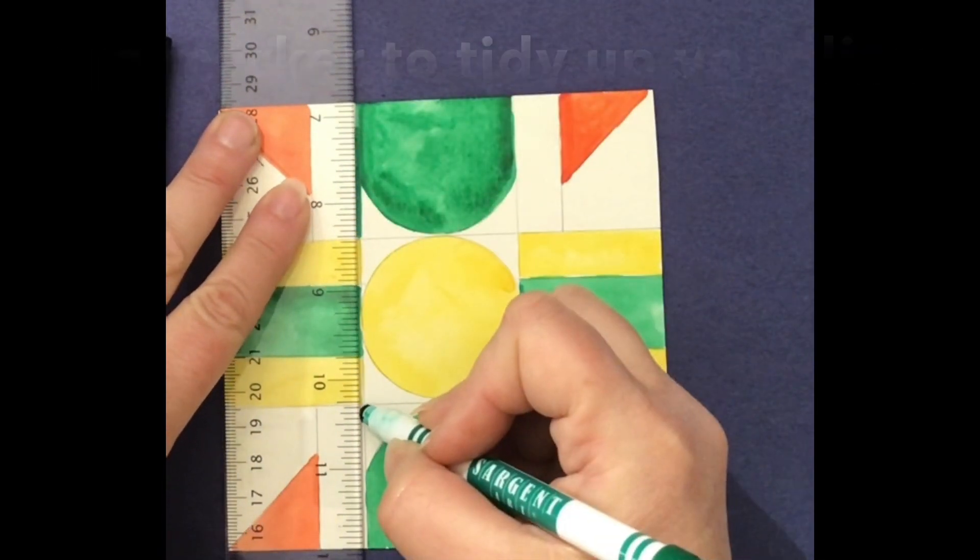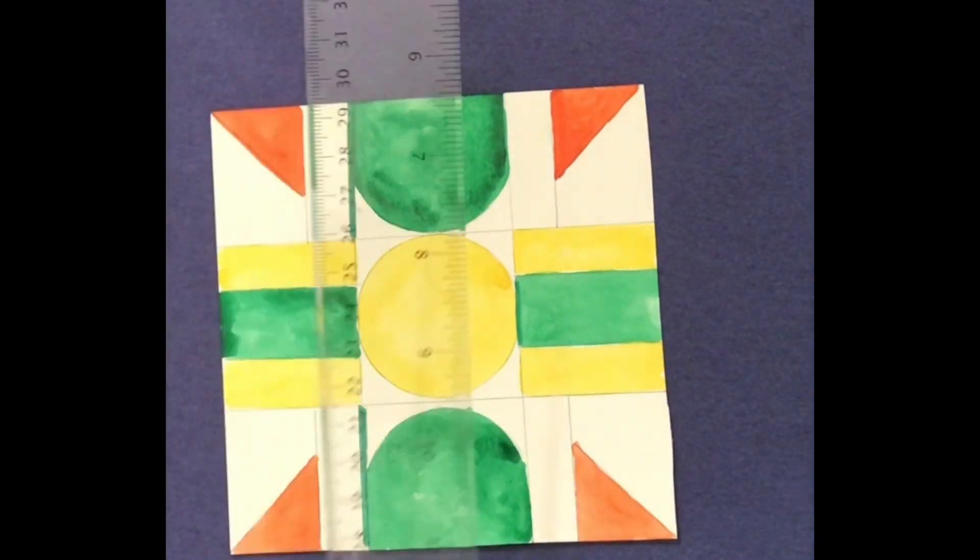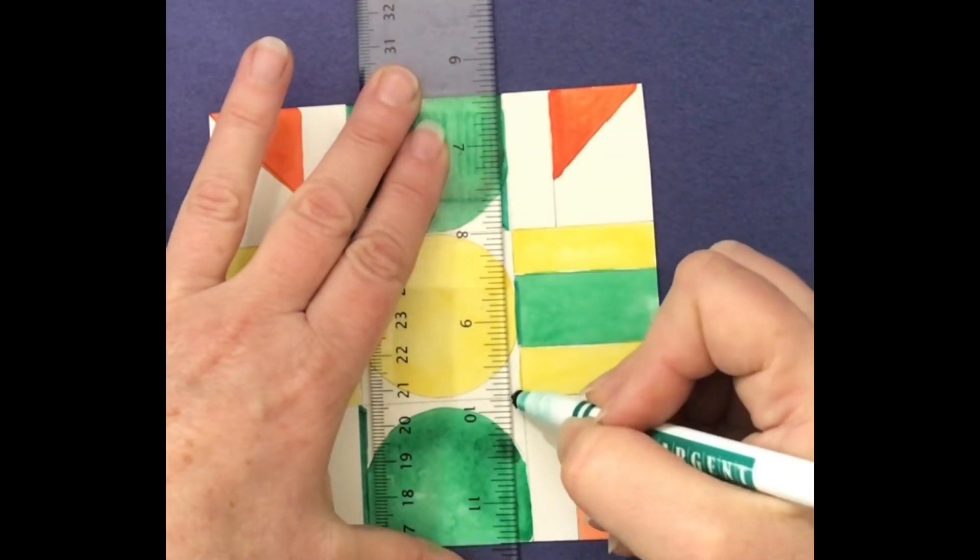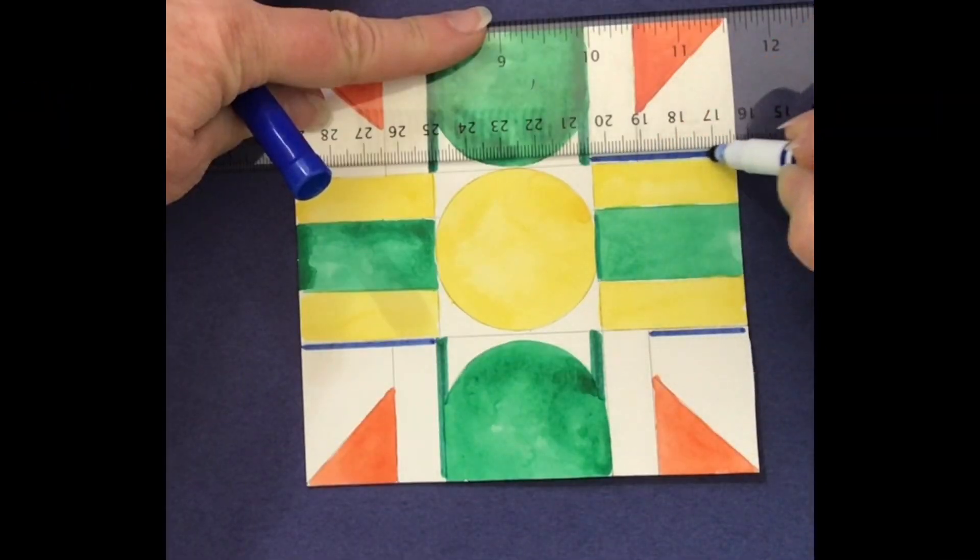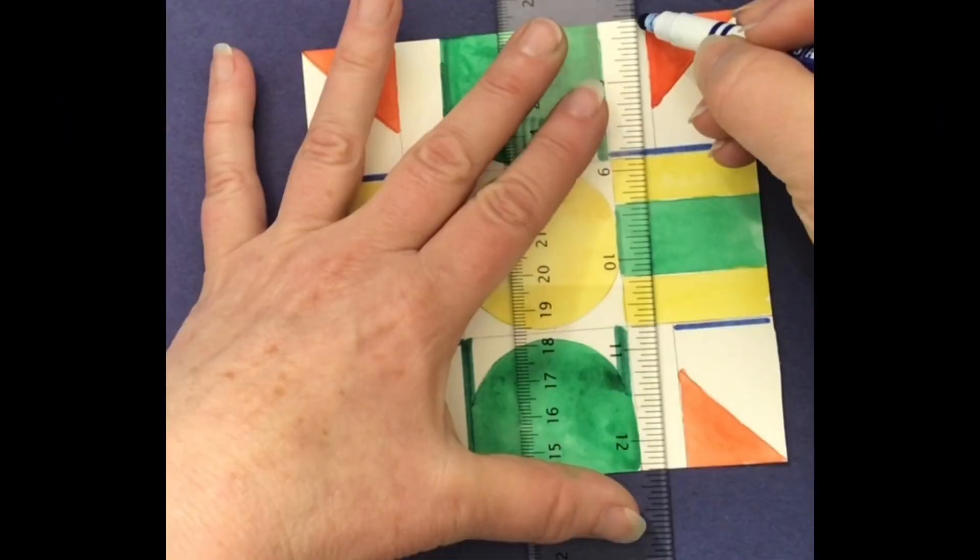Okay, it is really dry and you can use a hairdryer to dry this. Now I'm using the ruler to get some straight lines and I'm using different markers. I chose to add blue. I think it looks kind of cool. What do you think?